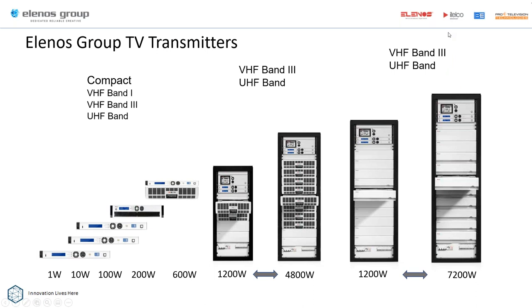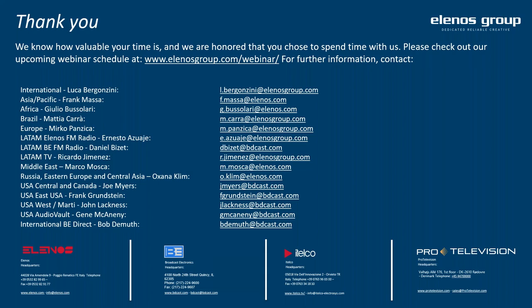Here's a picture of all the transmitters available from the Elenos Group, from one watt to 7.2 kilowatts — these are OFDM power levels, available in VHF band one and three at the lower power levels, UHF and VHF band three at the higher, available in air-cooled and liquid-cooled. For future webinars, go to www.elenosgroup.com/webinar to sign up. Here are the contacts to reach if you have questions about buying any Elenos Group products. Thank you so much for spending some of your day with us. Thank you very much, Perry, for your knowledge and expertise. For Perry Priestley and myself, Chuck Kelly, and for the entire Elenos Group of companies — thank you for being with us today.